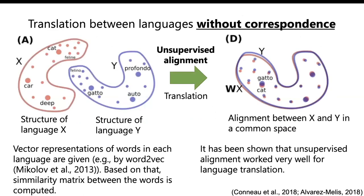This method has already been successfully used in language translation, which is a remarkable thing. We have the structure of language X, like English, and the structure of German. We do unsupervised alignment, meaning we don't know any given correspondence between words in English and German, and it has been shown that unsupervised alignment works very well for language translation. We expect this method can be used even for qualia structure alignment.